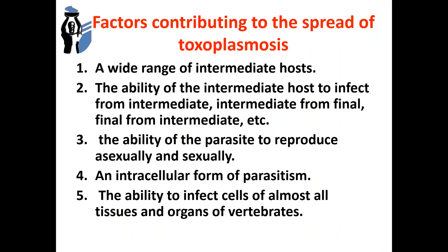There are four factors contributing to the spread of toxoplasmosis: first, a wide range of intermediate hosts; secondly, the ability of the intermediate host to infect from intermediate, intermediate from definitive, and definitive from intermediate; next, the ability of the parasite to reproduce sexually and asexually with intracellular form of parasitism; and the ability to infect cells of almost all tissues and organs of vertebrates.